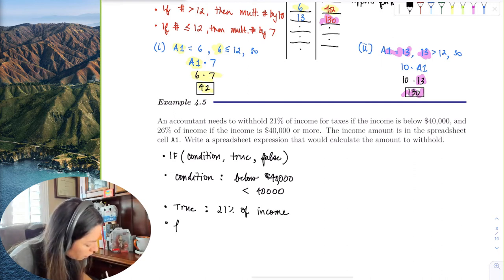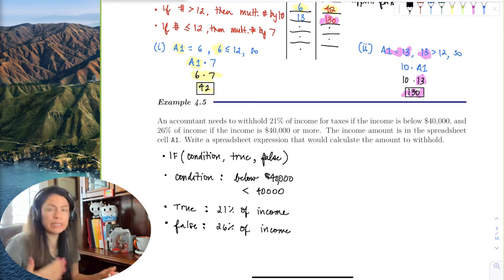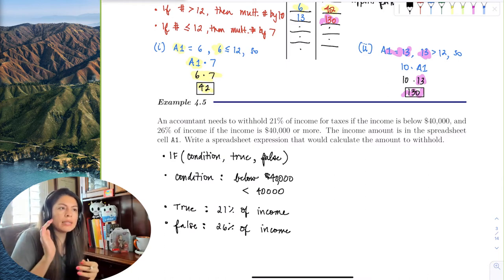And if it's false, let's say the person makes more than $40,000, they take 26% of the income. So the income is going to vary—that's the variation. And the barrier income is the $40,000.